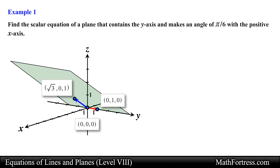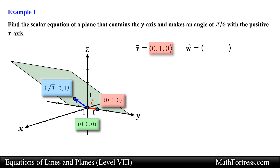Now that we have a third point we can generate two nonparallel vectors that are on the plane. If we use the origin to represent the initial point of both vectors, then the components of the vectors would just be equal to the terminal points of the vectors. So one vector will have components equal to 0, 1, 0 and the second vector will have components equal to root 3, 0, 1. Let's denote them as vector v and vector w respectively.